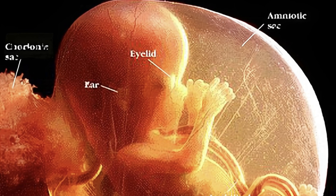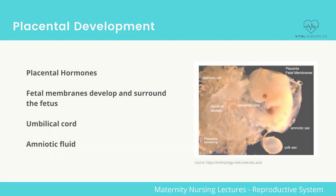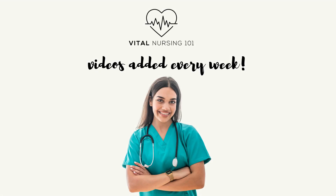Amniotic fluid is replaced every three hours. By the end of pregnancy, the normal amount of amniotic fluid is 800 to 1,200 milliliters. The purpose of amniotic fluid is temperature regulation, protection, and promoting musculoskeletal development of the fetus.